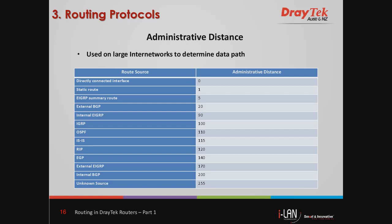On large internet networks, multiple routing protocols are commonplace. For example, there could be a mixture of static routes, RIP, and OSPF routing protocols being used. So the obvious question arises: which route will the router finally use to transport the data? A solution is to look at the administrative distance for a particular route. The administrative distance is a number from 0 to 255 that indicates the reliability of the route's source — the lower the administrative distance, the more reliable the source. The table below shows the administrative distance for each type of route source. A directly connected interface has the administrative distance of 0, followed by static routes.